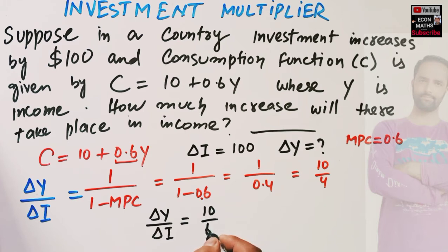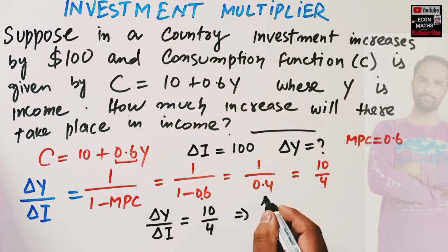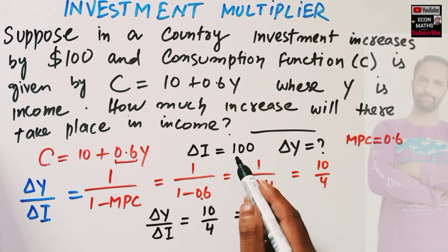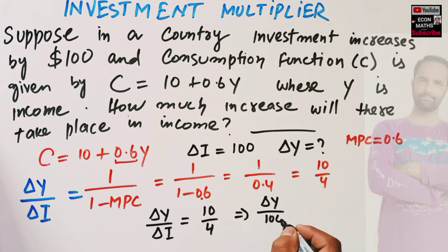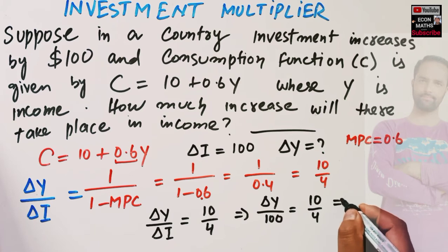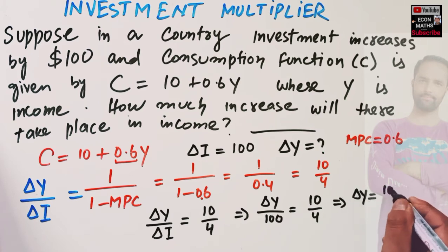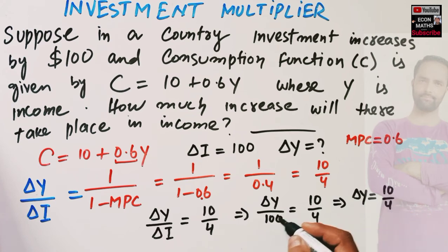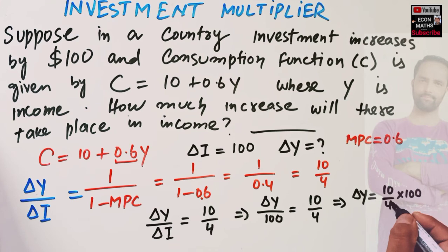Which implies our change in income upon change in investment... change in investment is $100. Let's write it here: ΔY/100 should be equal to 10/4, which gives us change in income will be equal to 10/4. If I transpose this 100 it will get multiplied. So we have 4×25=100... 25×10 is 250.